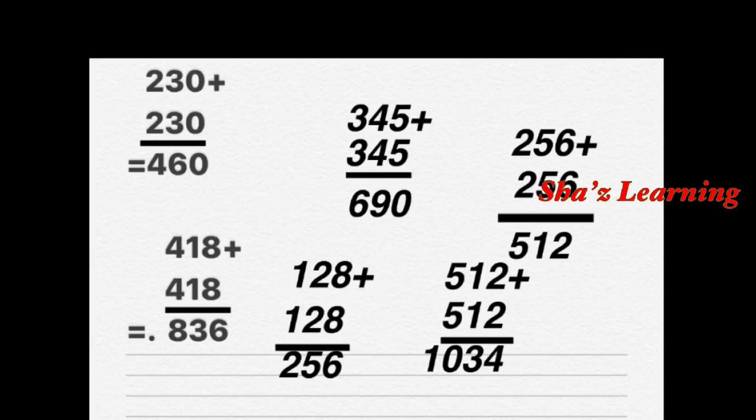256 plus 256: 6 plus 6 is 12, write 2 carry 1. 5 plus 5 is 10, plus 1 carried, balance 1. That is 512.